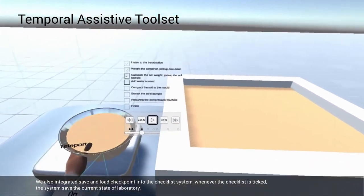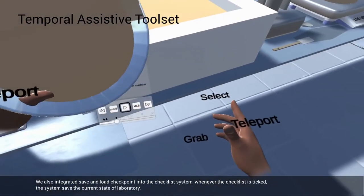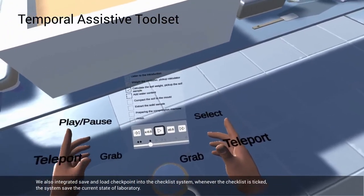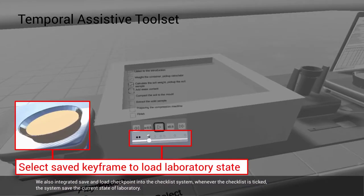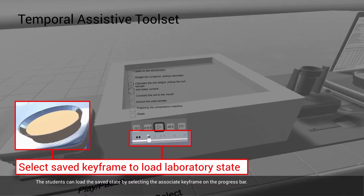We also integrate save and load checkpoint into the checklist system. Whenever the checklist is ticked, the system saves the current state of laboratory. The students can load the saved state by selecting the associate keyframe on the progress bar.